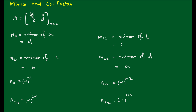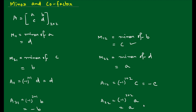So the co-factor A11: (-1)^(1+1) is even, so it is positive — A11 equals D. Co-factor A12: (-1)^(1+2) is odd, so it is negative — A12 equals minus C. Co-factor A21: (-1)^(2+1) is odd, so it is minus — A21 equals minus B. Co-factor A22: (-1)^(2+2) is even, so it is positive — A22 equals A.